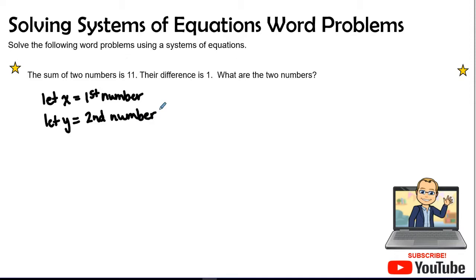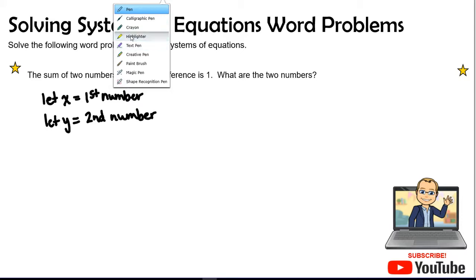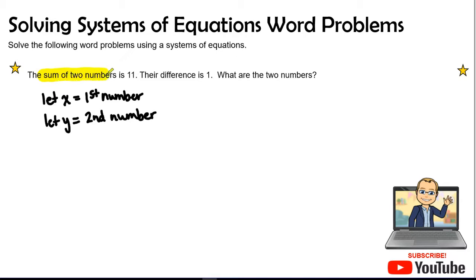Now, in this equation, we are going to have to put a system together. So let's see, let me get my highlighter here. Let's see the sum. So sum means addition, the sum of two numbers. So we're going to have the first number and the second number. So we have X and Y. Is, we know that is means equals. So X plus Y is equal to 11. That is our first equation because that shows the sum of these two numbers.